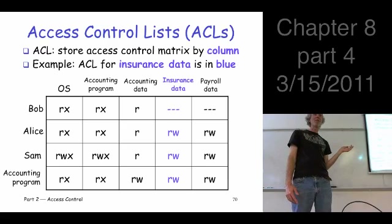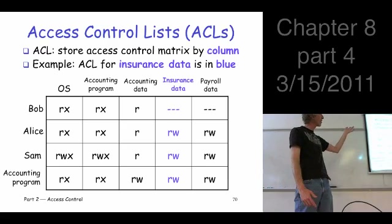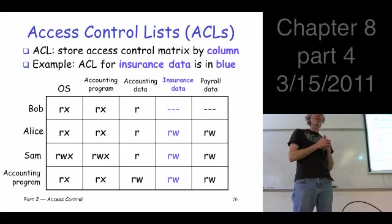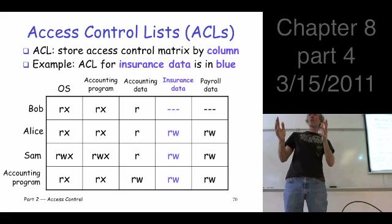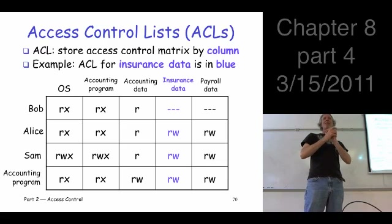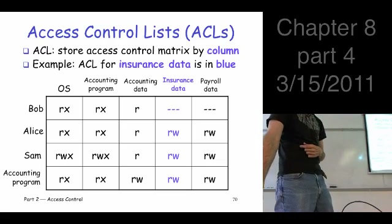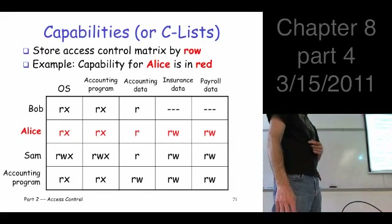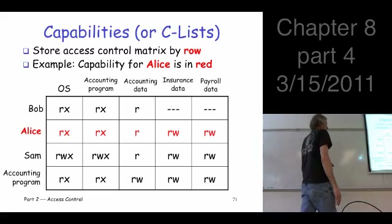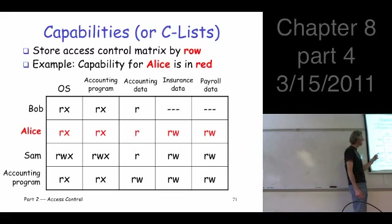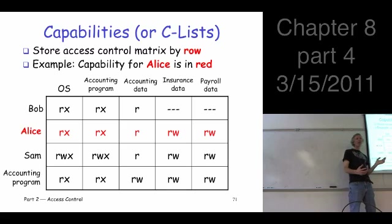If we can store it by column, we call this an access control list, or ACL. And if we can store it by column, we can also store it by row — by user. We call this capabilities. For example, for Alice, we would store this list because this is what Alice is capable of doing.